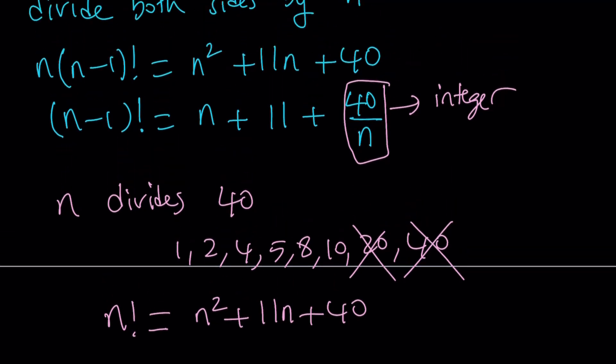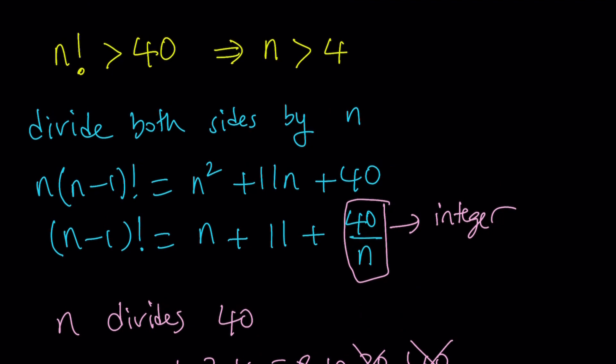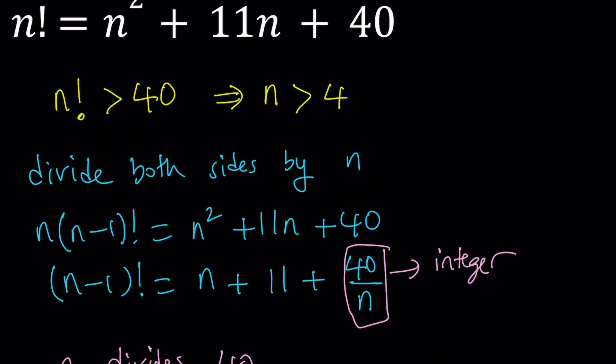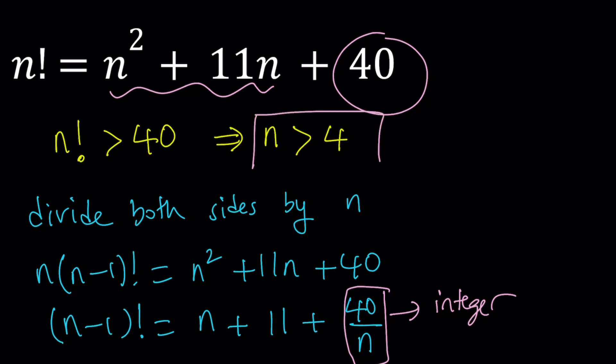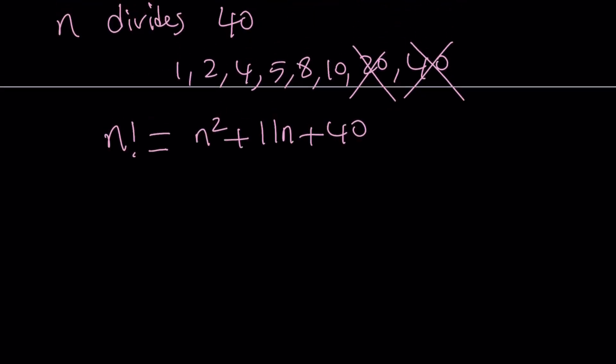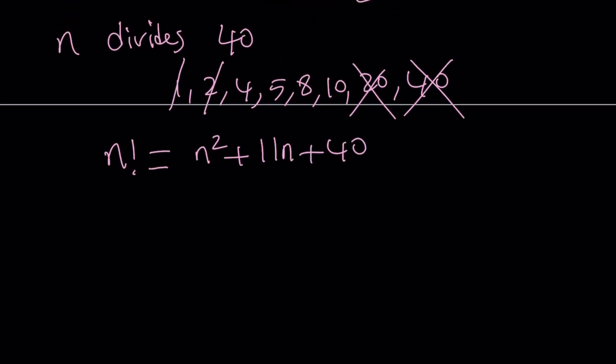Remember, we had a condition. When we looked at the value of n factorial on the right-hand side, we noticed that since these are non-negative, the n factorial had to be greater than 40, which means n is greater than 4. So that kind of gives us a nice lower bound. We're not going to consider anything less than or equal to 4. 1, 2, and 4 are gone. So we're left with 5, 8, and 10.